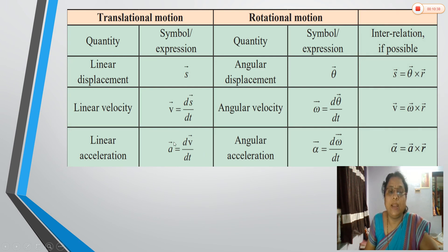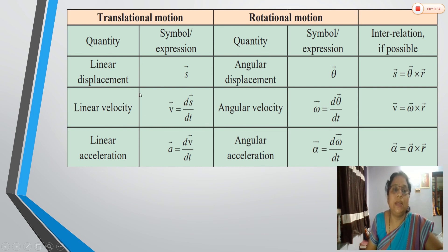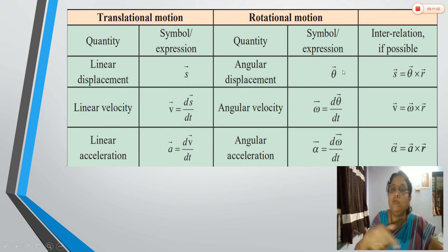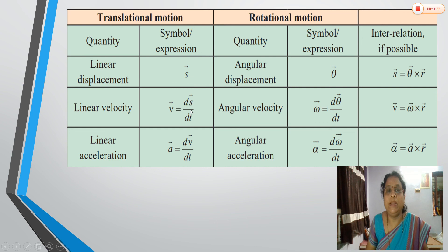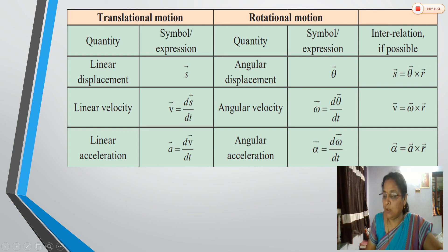This table from your textbook compares translational motion with circular motion. In translational motion the displacement is linear; in circular motion there is angular displacement — these are analogous. Linear velocity (rate of change of linear displacement) corresponds to angular velocity (rate of change of angular displacement). Linear acceleration (rate of change of linear velocity) corresponds to angular acceleration (rate of change of angular velocity).